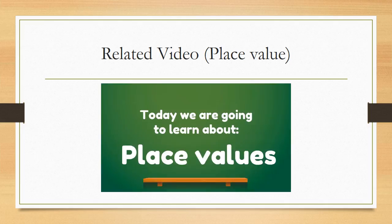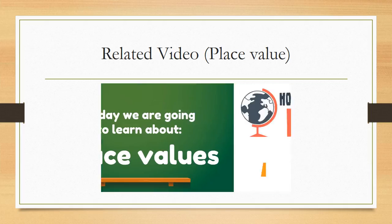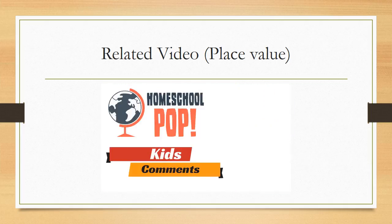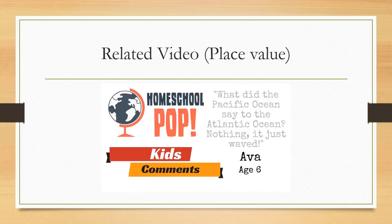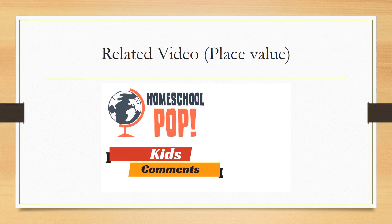We hope you're ready for both fun and adventure because today we are going to learn about place values, which are really exciting and awesome. But first, six-year-old Ava had a joke: what did the Pacific Ocean say to the Atlantic Ocean? Nothing — it just waved! Thank you, Ava, that's awesome.